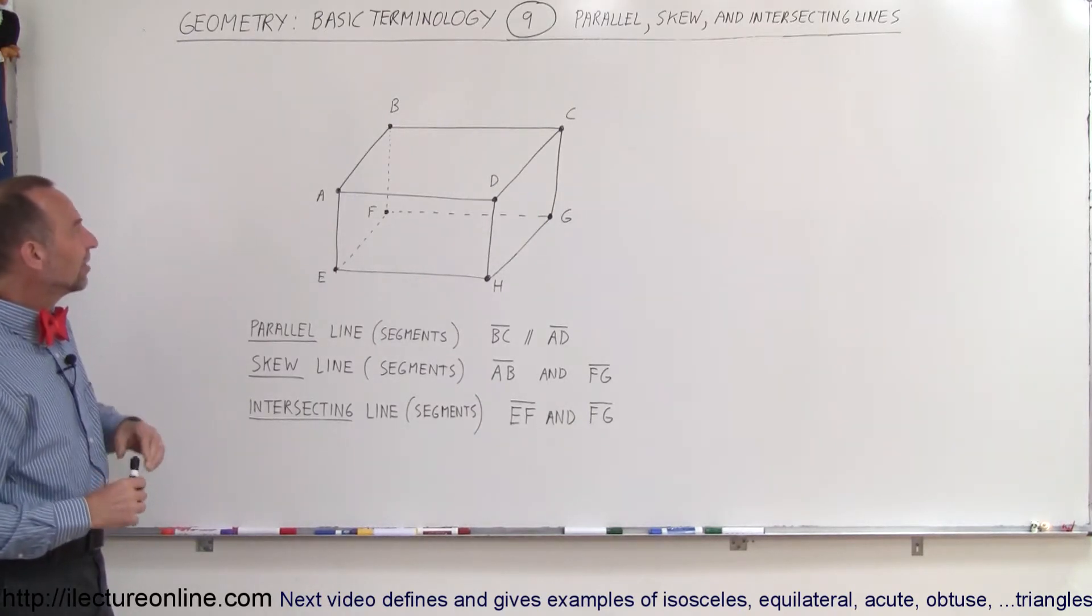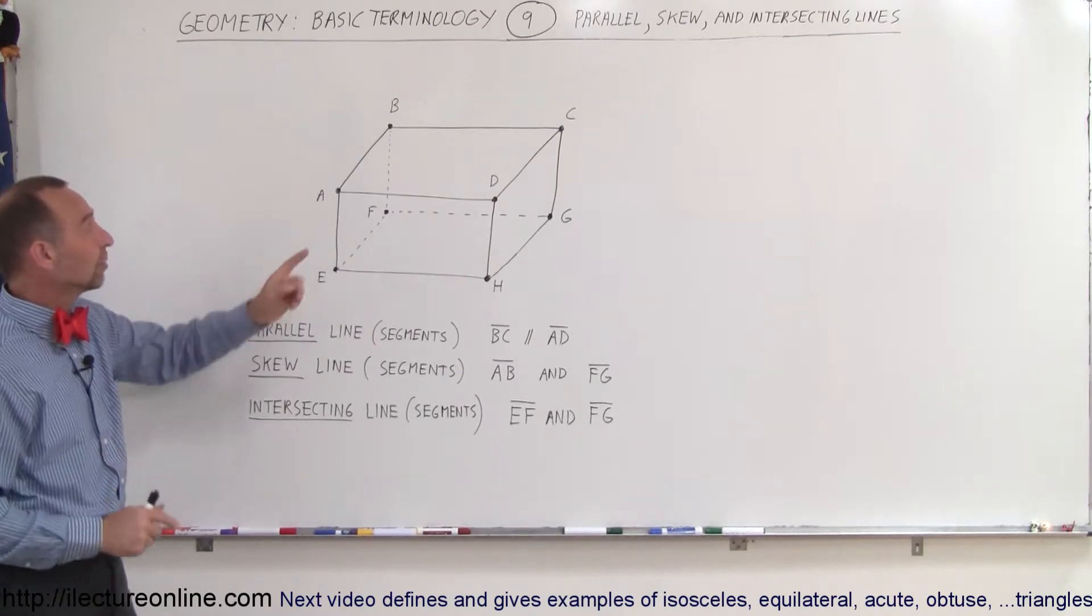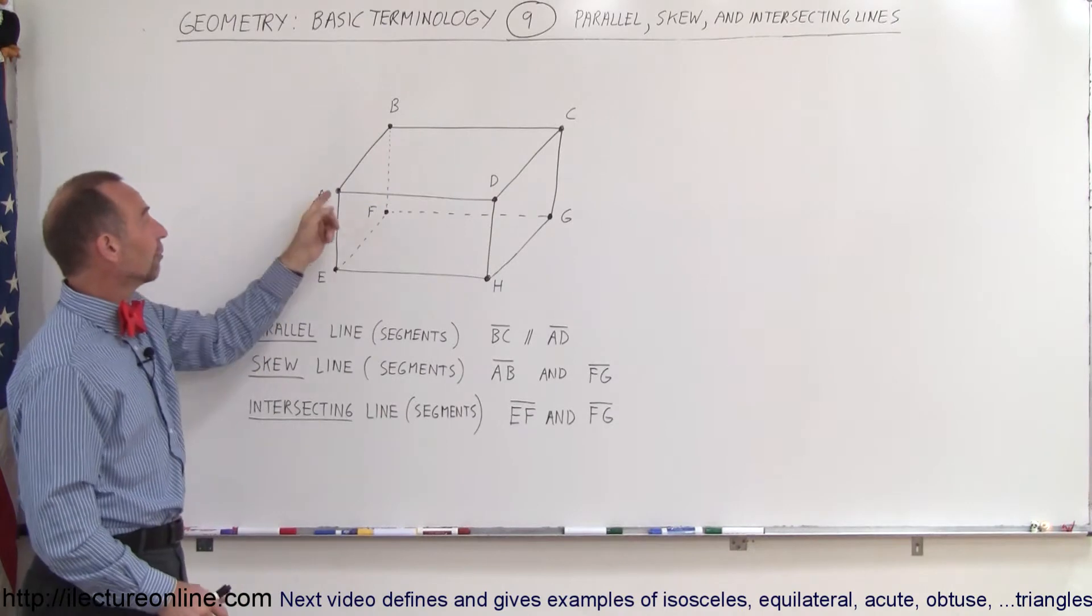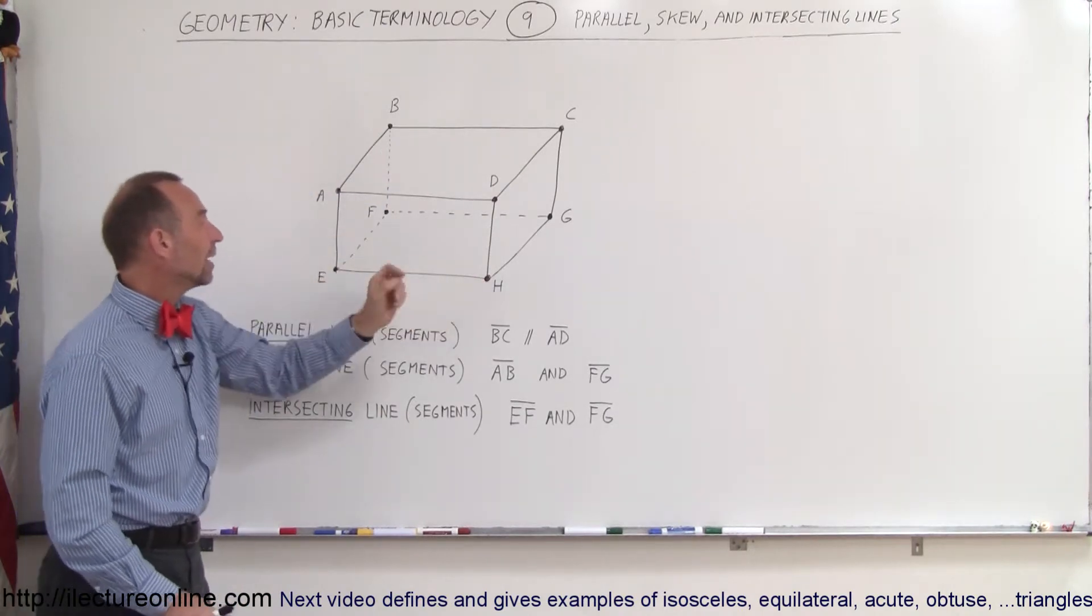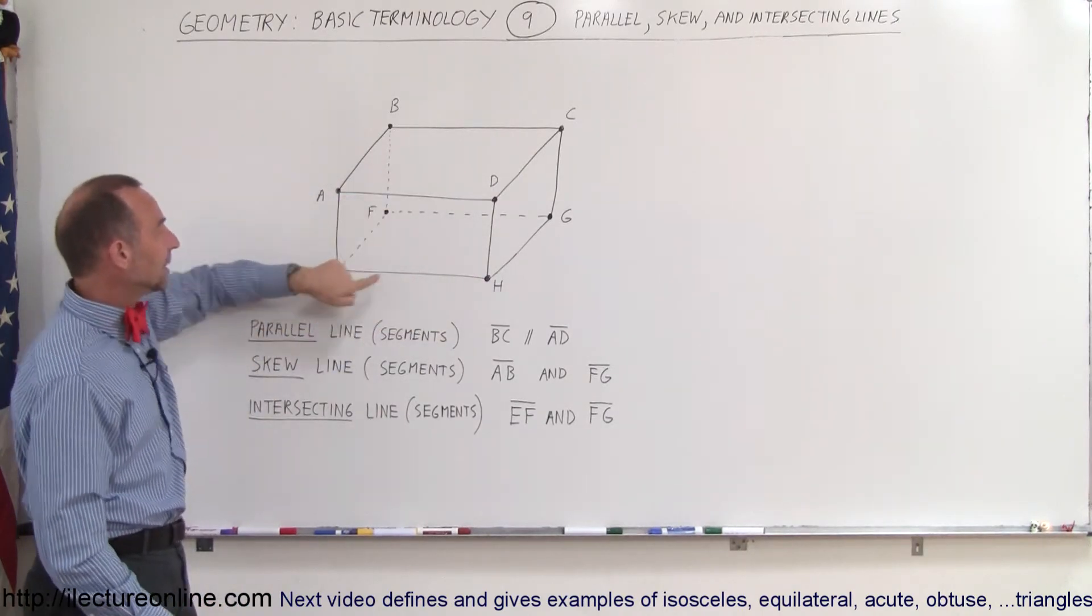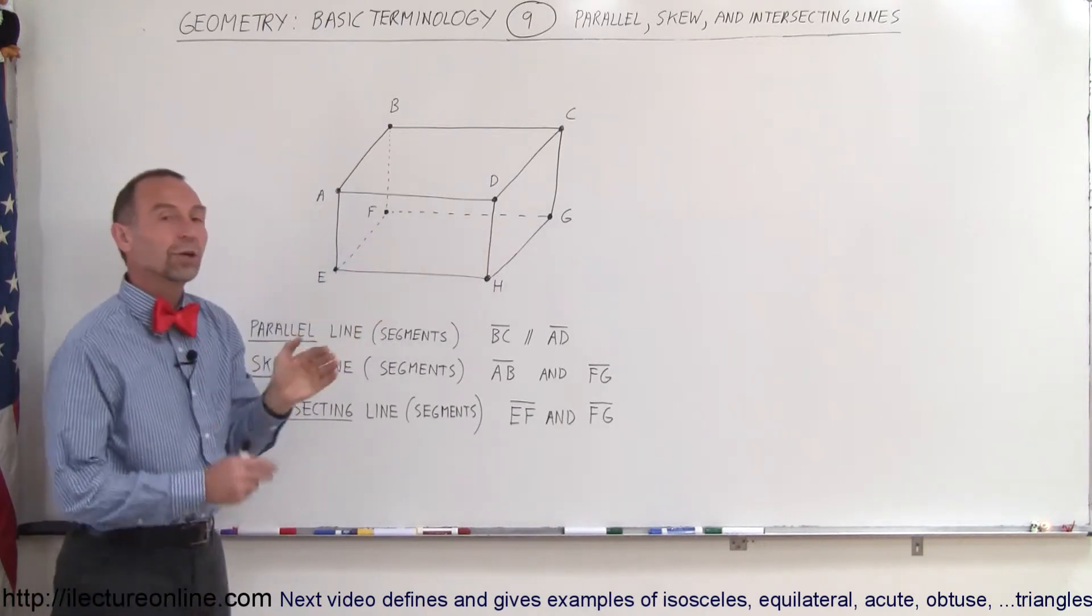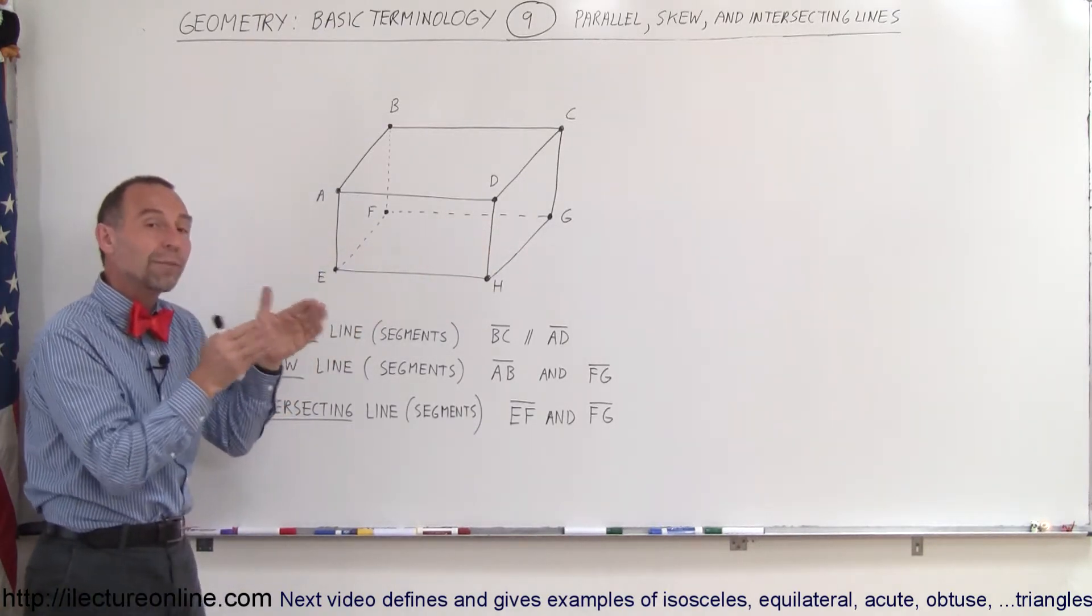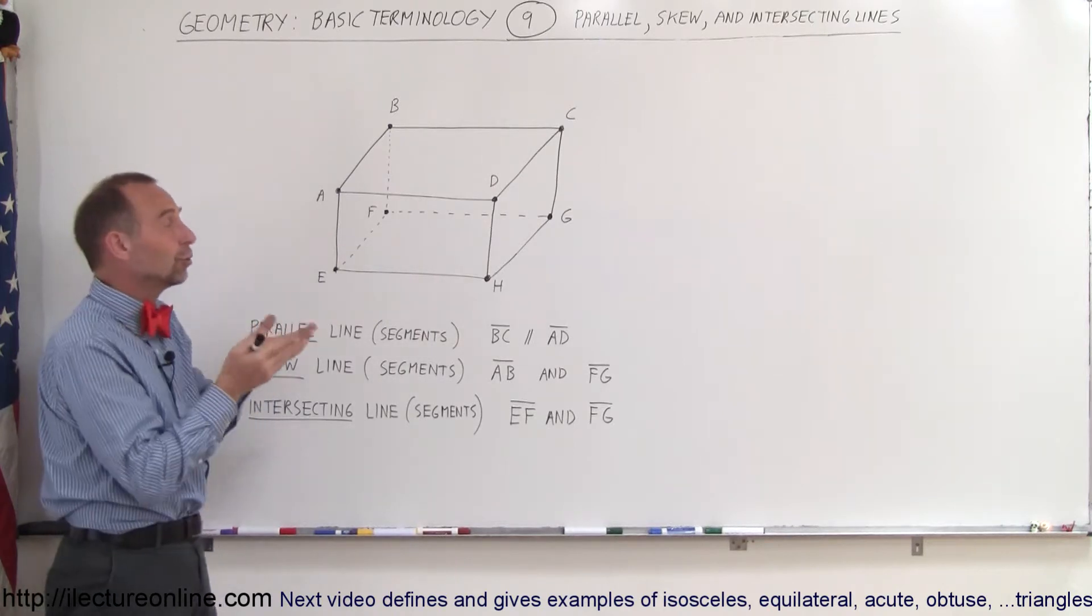We can see here that the line segments from A to D and B to C are parallel to one another. A to D and E to H are parallel. E to H and F to G are parallel. In other words, if you go on forever, the distance between the two lines will remain the same. That's the definition of parallel lines.